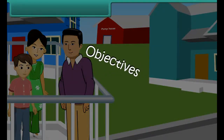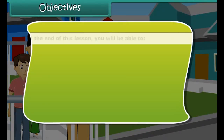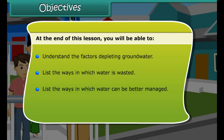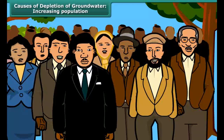Objectives: At the end of this lesson, you will be able to understand the factors depleting ground water, list the ways in which water is wasted, list the ways in which water can be better managed, and understand the effects of water scarcity on life forms.